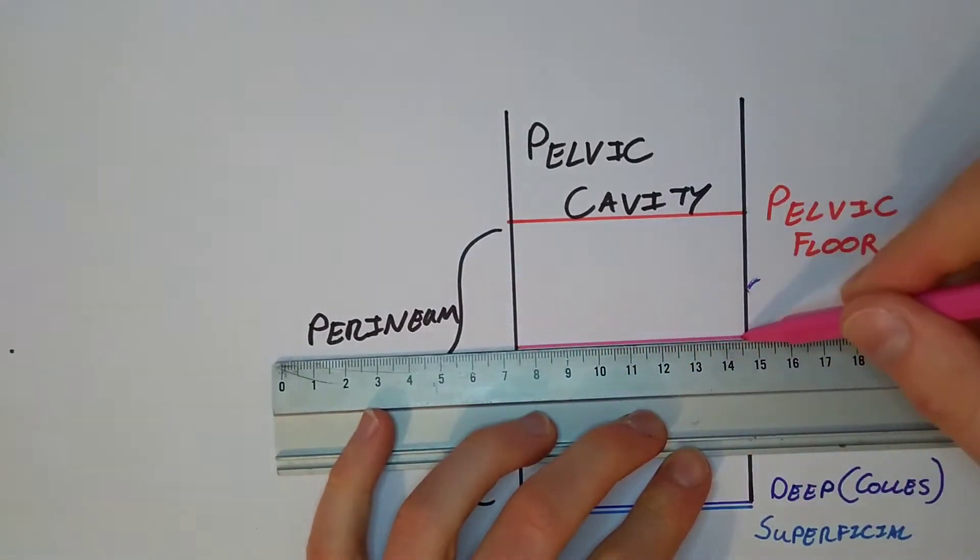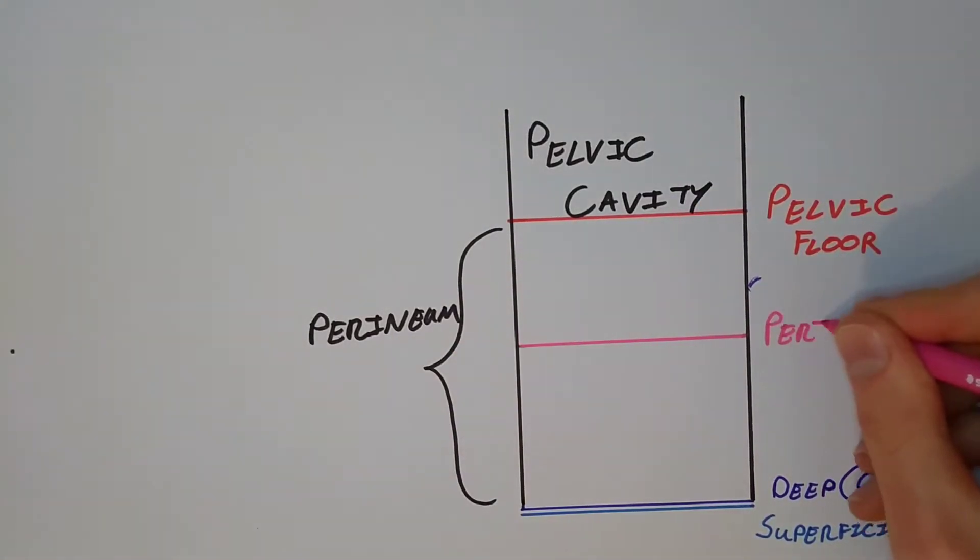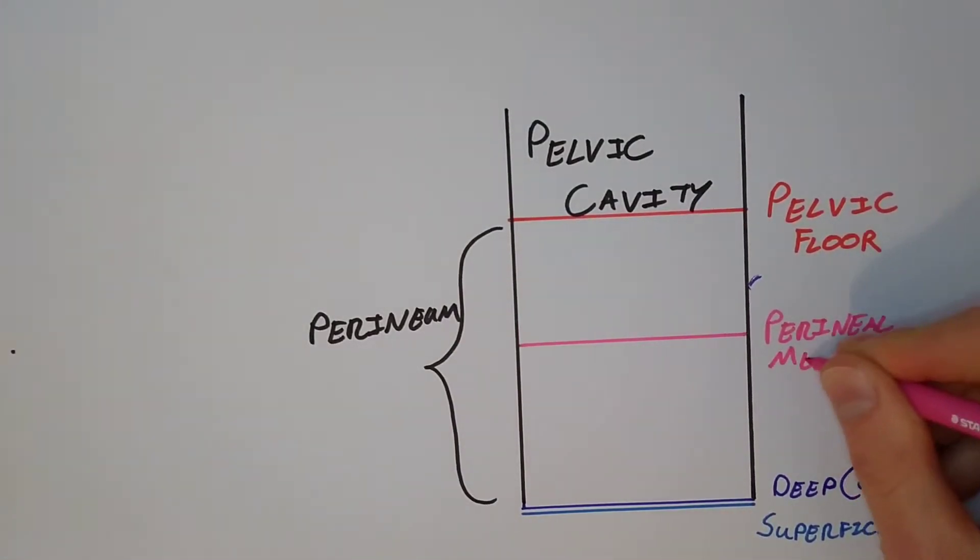Within the perineum, we have a perineal membrane that separates the perineum into two cavities, the deep and superficial pouch.